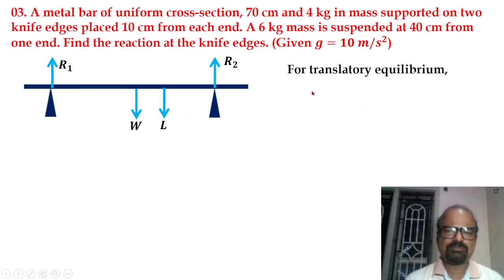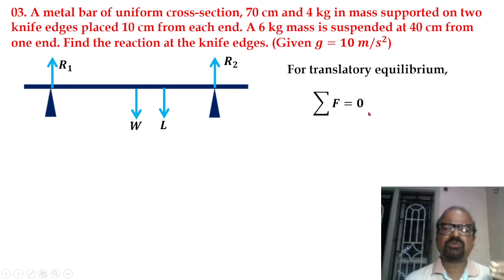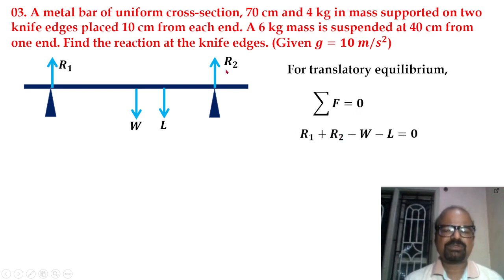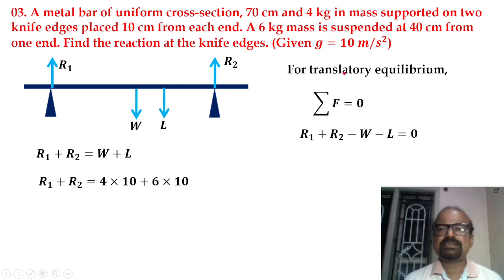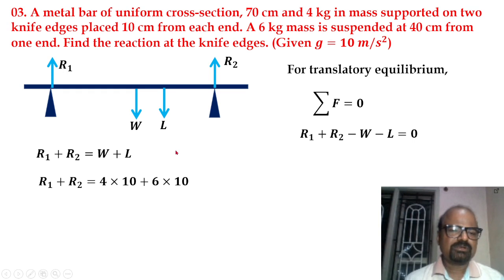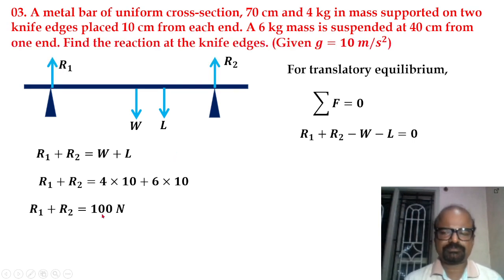For translational equilibrium, sigma F equals zero — the sum of forces acting on the body equals zero. The reactions R1 and R2 act upward; the weight of the rod and the suspended load act downward. So R1 plus R2 equals W plus L. With rod mass 4 kg and suspended mass 6 kg, using g = 10, we get R1 plus R2 equals 100 N.